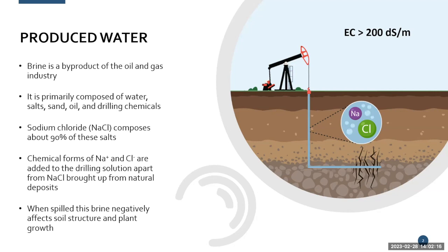It can have ECs — electrical conductivity, which is how salty the water is — greater than 200 deci-siemens per meter. This water is usually stored in tanks next to the pumps or in pipelines, but occasionally these things spill. When this happens, it can have detrimental effects to both the soil and any organisms living there.